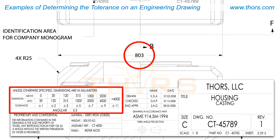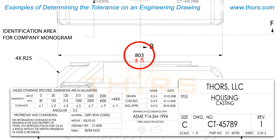In referencing the tolerancing information, the dimension 803 millimeters falls between 315 and 1000 millimeters. The tolerance specified for this range is plus or minus 5 millimeters. This means that the dimension of 803 millimeters can fall in the range of 798 to 808 millimeters.